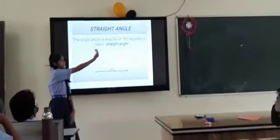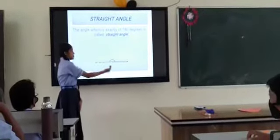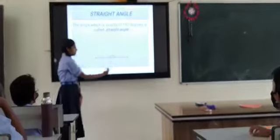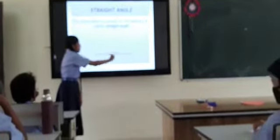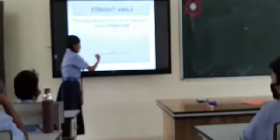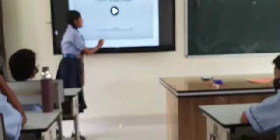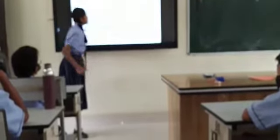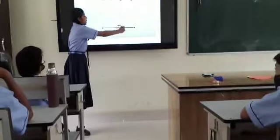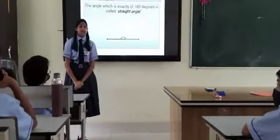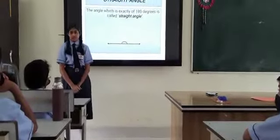Now next we will see what is a straight angle. The angle which is exactly 180 degrees is called a straight angle. Here you can see when it forms 180 degrees, it forms a straight line — that's why it is called a straight angle.